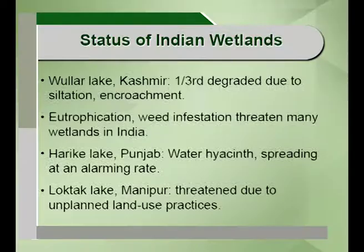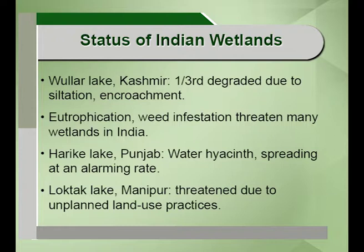In India, one third of the wetlands in Wullar Lake in the Kashmir valley have been degraded due to siltation, encroachment practices, eutrophication and weed infestation. Eutrophication occurs when water is highly enriched with nitrogen and phosphorus, and water hyacinths or weeds take up all the oxygen present. The dissolved oxygen content reduces and many flora and fauna cannot flourish, as the toxins released by these weeds can even kill some plant and animal species.